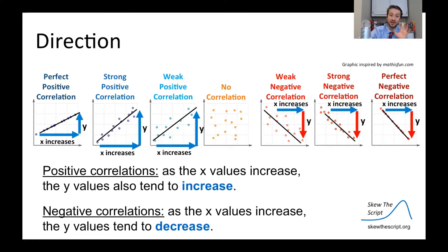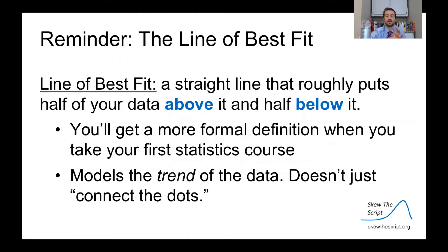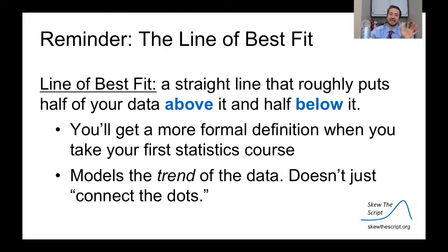We can draw what we call a line of best fit — this black line that kind of goes to the center of the data. A neat trick to remember: for positive correlations, the line of best fit will have a positive slope, and for negative correlations, the line of best fit will have a negative slope. You can think of it as a straight line that roughly centers your data — half of the data will be above and half will be below. For now, you can think of it as modeling the trend of the data. It's not just connecting the dots.